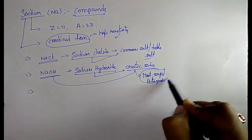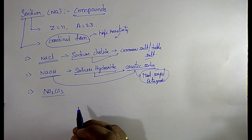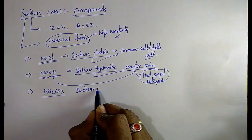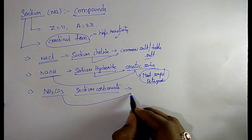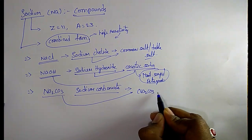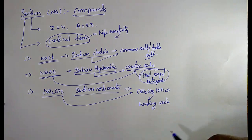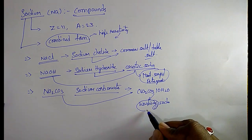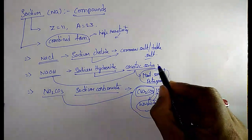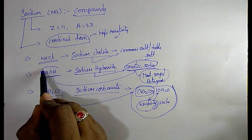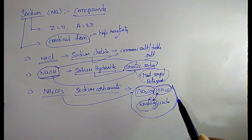I already told the uses of all these components in the salts class, but I am repeating because they are very very important. Na2CO3 is sodium carbonate. Sodium carbonate with water is called washing soda. Caustic soda has no water — it has hydroxide. So sodium hydroxide is caustic soda, and sodium carbonate with water is washing soda.